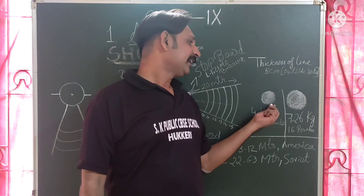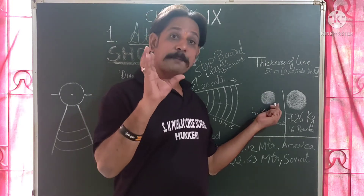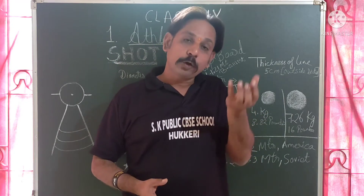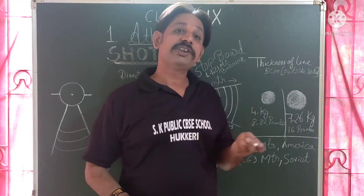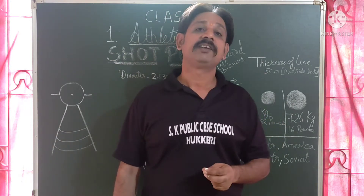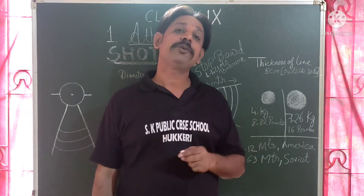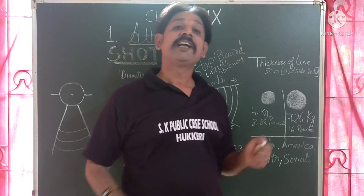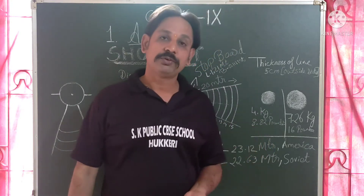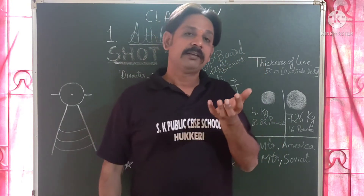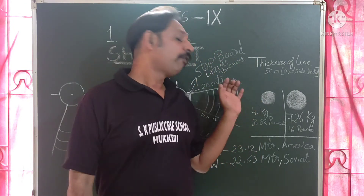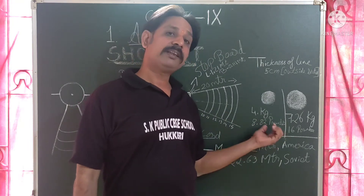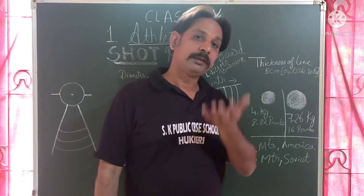The shot put is round and spherical in shape. The weight of the shot put for girls is 4.00 kg, which is 8.82 pounds. So for females, the shot put weight is 4 kg or 8.82 pounds.